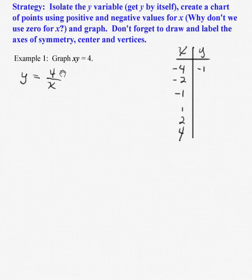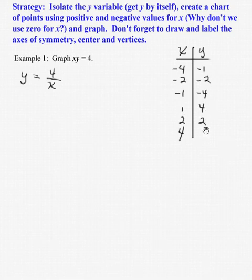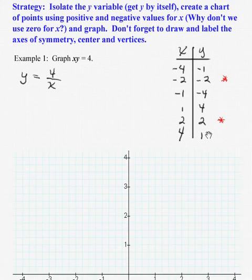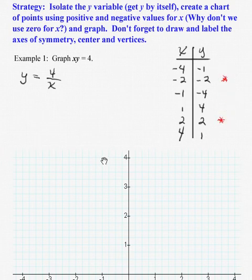We put in x = −4: 4 divided by −4 is −1. Put in x = −2: 4 divided by −2 is −2. Then 4 divided by −1 is −4. Then 4 divided by 1 is 4. Then 4 divided by 2 is 2. And 4 divided by 4 is 1. Let's go ahead and graph these. You might be wondering what those little red stars are — we'll come back to that in a moment.